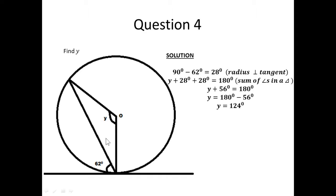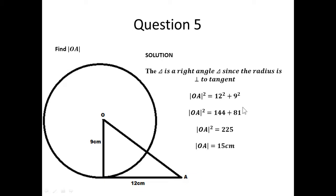Since this triangle is isosceles with both base angles equal to 28 degrees, adding them and subtracting from 180 degrees gives us angle Y. That gives us 124 degrees. Also, from here, this radius is perpendicular to this tangent, which means this angle is 90 degrees.